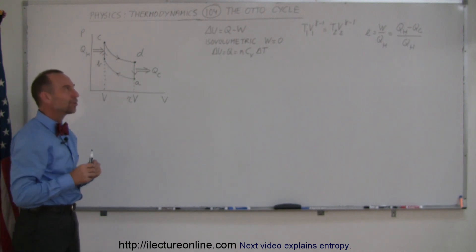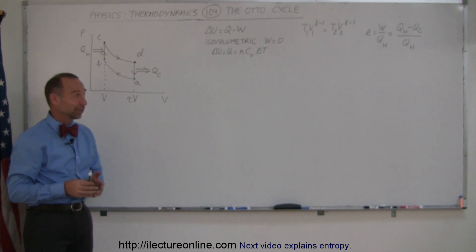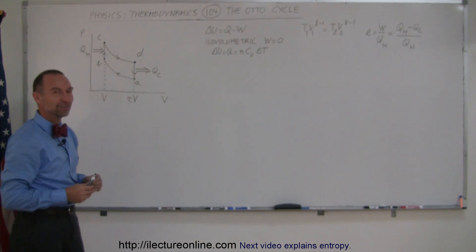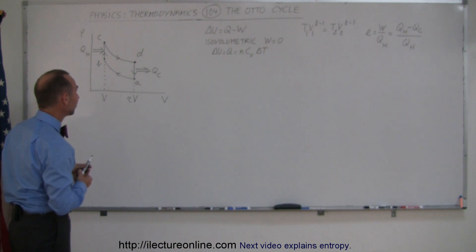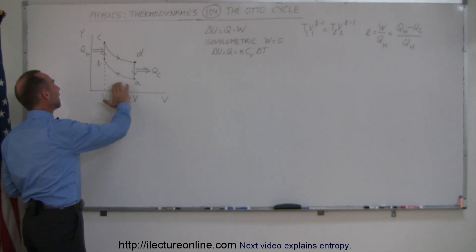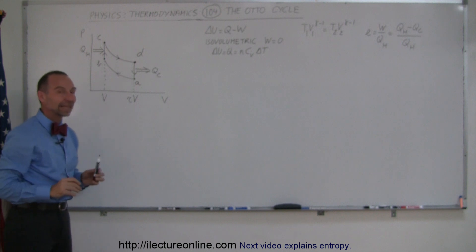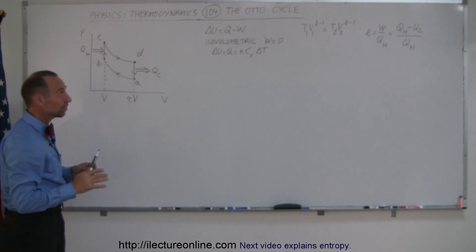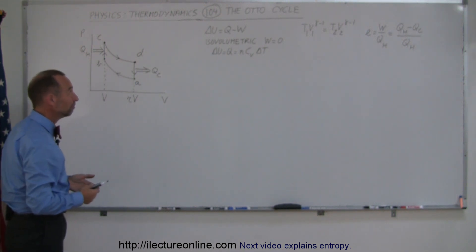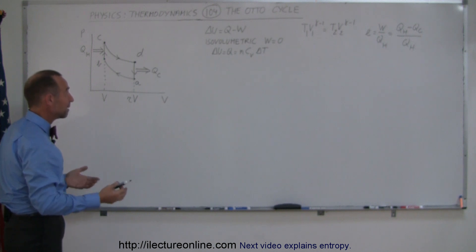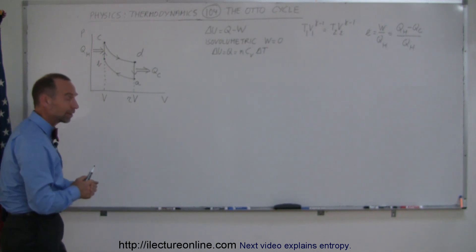Why do you think we call automobiles, automobiles? You guessed it — it's because of Otto, the German engineer, German physicist, who figured out that this was the thermodynamic cycle that best represented the thermodynamic cycle of a gasoline engine. And so we named automobiles after him, Otto. Quite an honor.